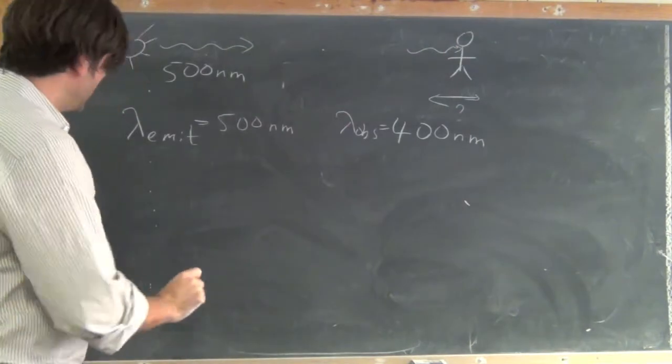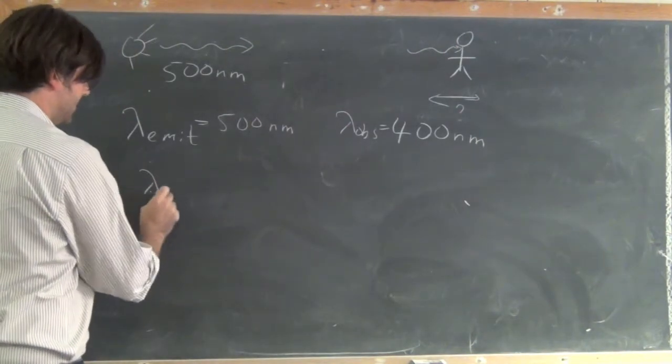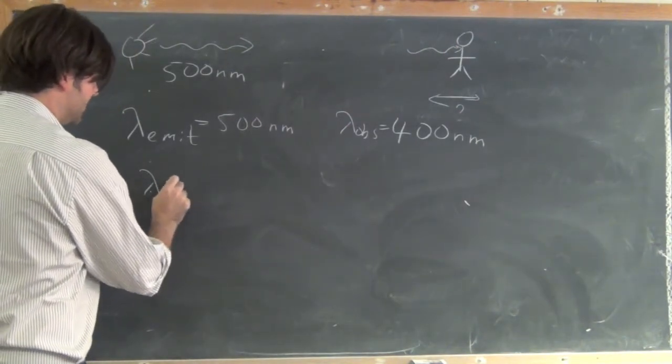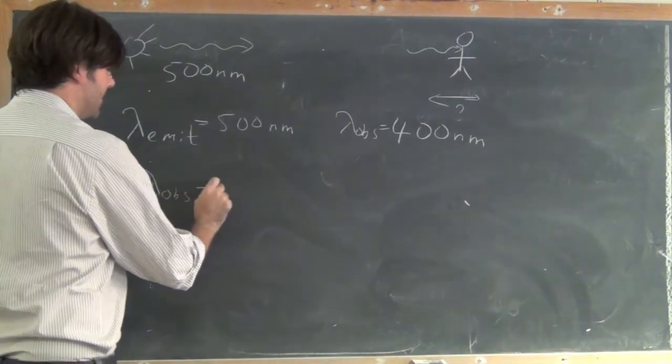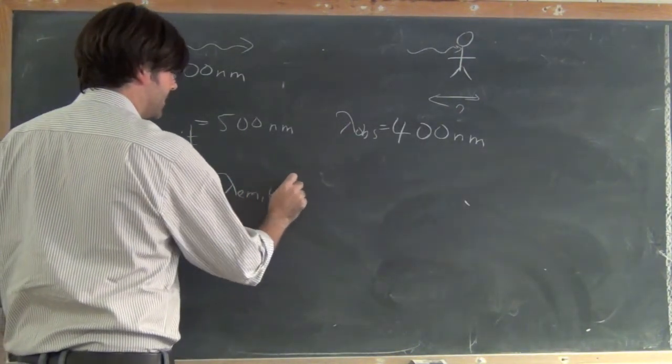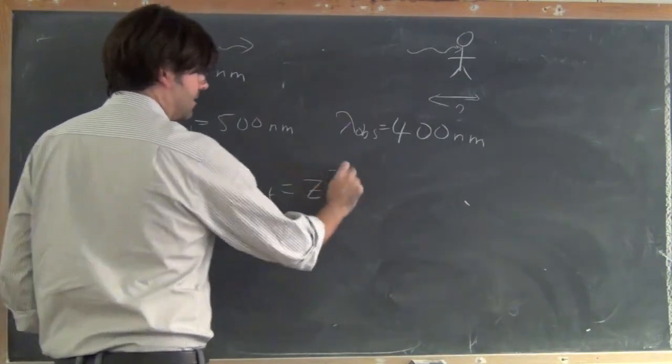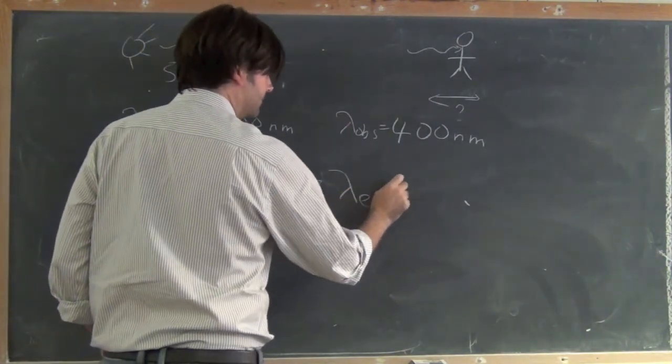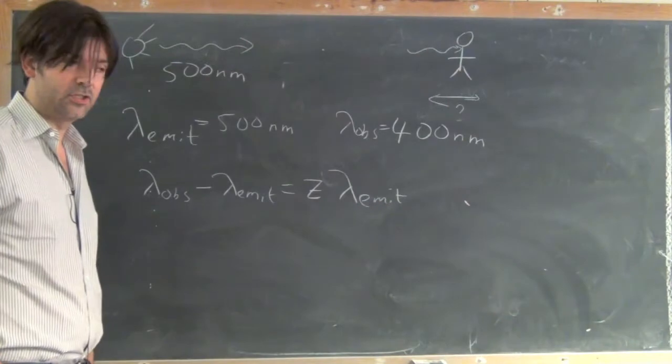And what do we know? We know that lambda observed minus lambda emitted is equal to z times lambda emitted. That's just the Doppler shifting formula.